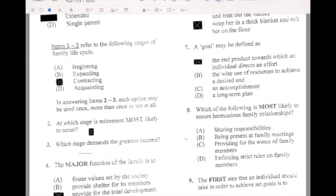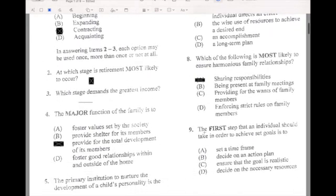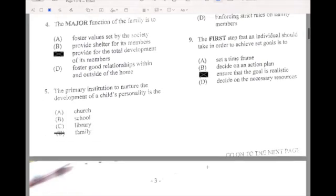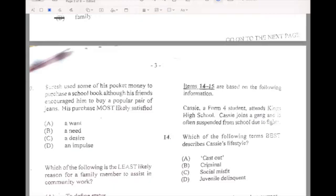Number eight, which of the following is most likely to ensure harmonious family relationship? If your answer is A, sharing responsibility. Number nine, the first step that an individual should take in order to achieve the set of goals is ensure the goal is realistic. So your answer is supposed to be C. Number ten, Sarah used some of her pocket money to purchase a school book. Although her friends encouraged her to buy a popular pair of jeans, his purchase most likely satisfied a need. Your answer is B.